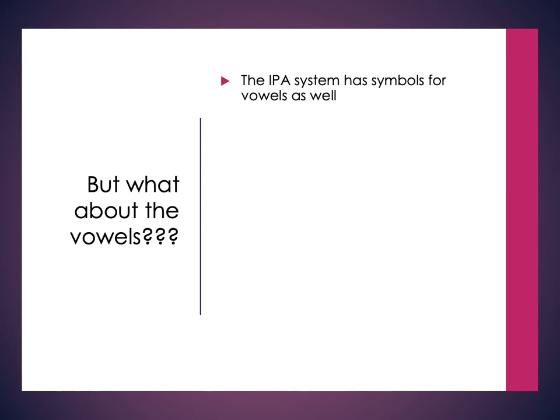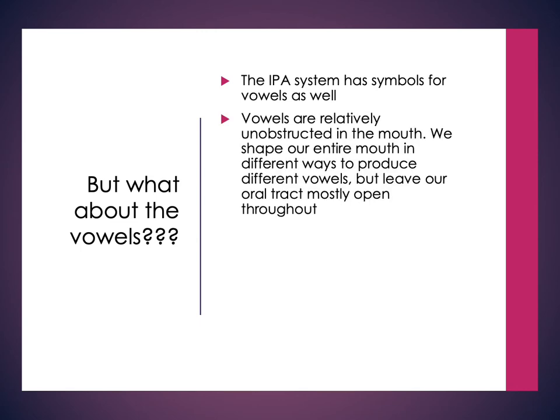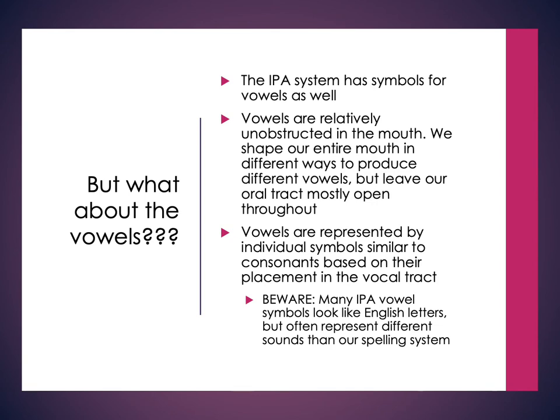You'll notice the vowel system on the handout — now's a good time to grab those. The reason we want to talk about vowels now is largely because vowels are very unobstructed in the mouth. We shape our entire mouth in different ways to produce vowels, but our oral tract is mostly open throughout their production. This is very different from consonant sounds, which tend to have very specific and minute changes. Vowels are much more open in the oral tract and vocal space, so we don't describe them as minutely or specifically as we do consonants.